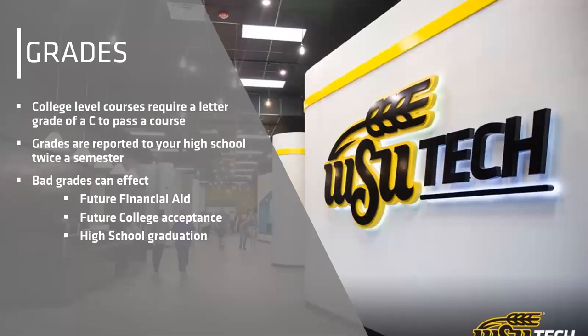College-level courses require a letter grade of a C or higher to pass. This might be different from what you have at your high school. Bad grades can affect your future financial aid and future college acceptance as well as your high school graduation. Remember that these classes are most likely covering your elective credits at your high school, so a bad grade here shows up as a bad grade on your high school transcript. Grades are reported to your high school twice a semester — we send a midterm report and a final grade report for fall and spring.